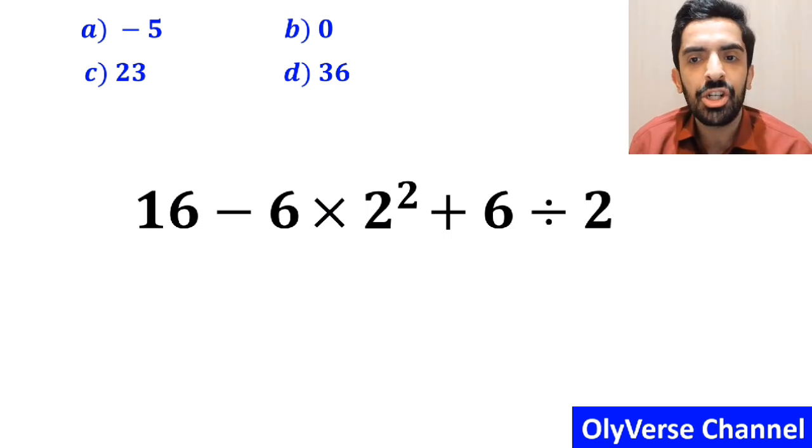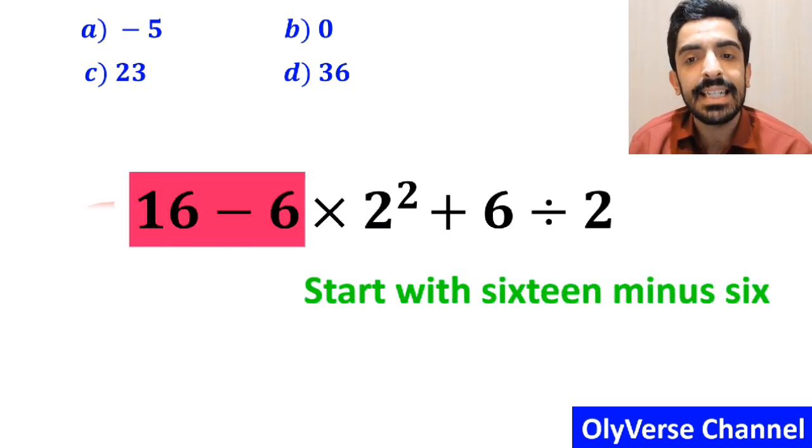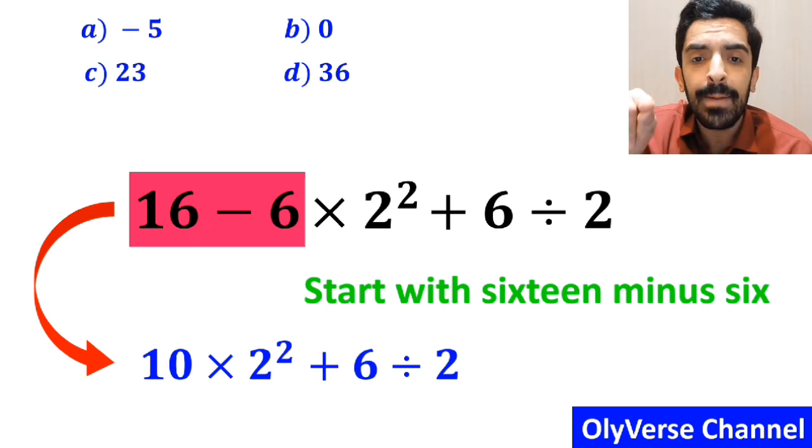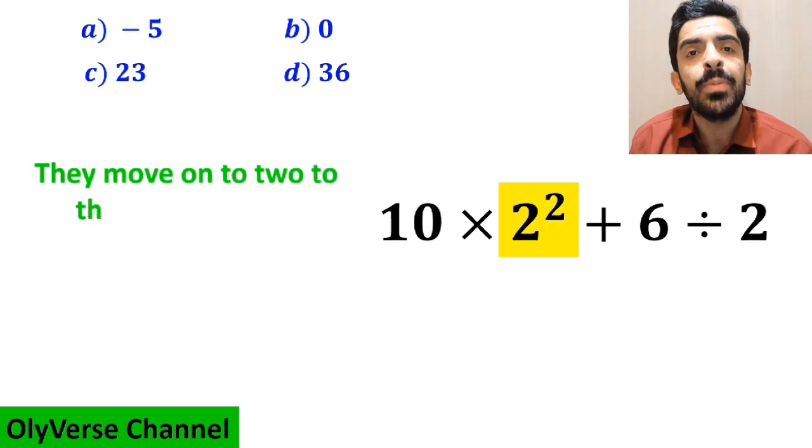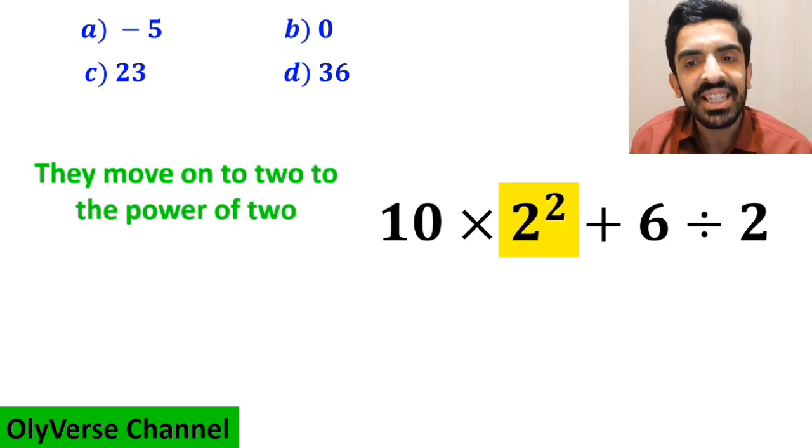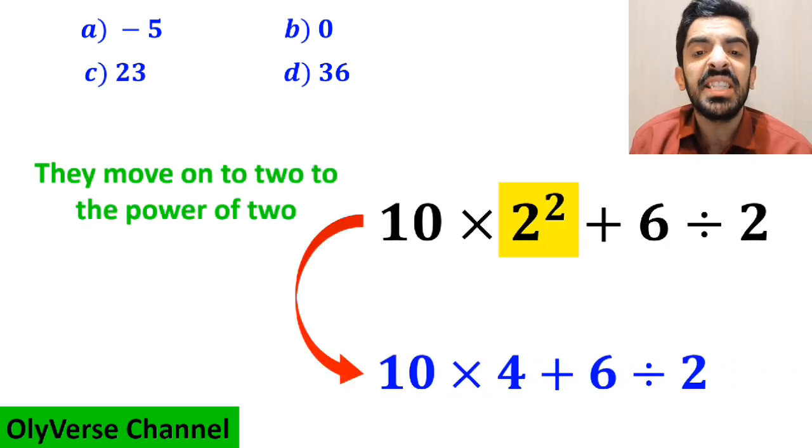Many people when solving this question start with 16 minus 6 and write this expression as 10 multiplied by 2 squared plus 6 divided by 2. Then they move on to 2 to the power of 2 which I have highlighted in yellow and replace this expression with 10 times 4 plus 6 divided by 2.